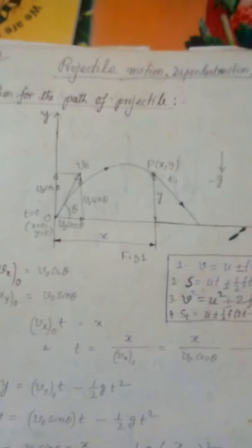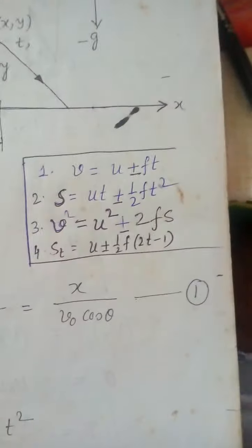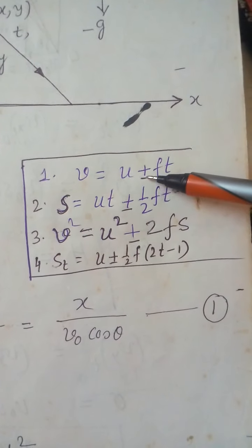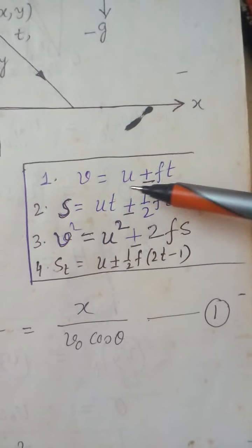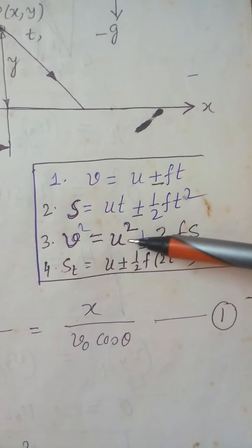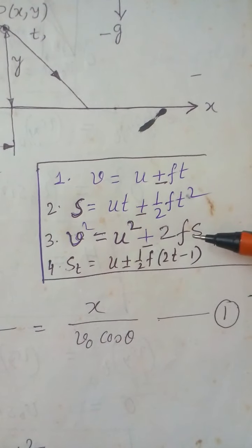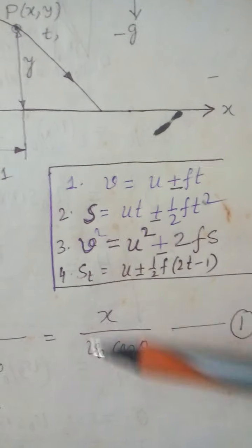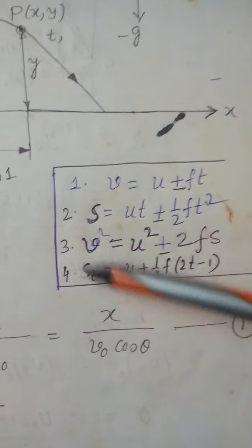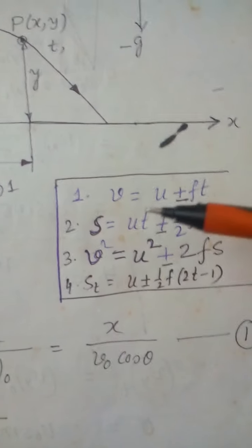We will be using these formulas, which are already known to you: v = u ± ft, where f is the acceleration or deceleration. Also s = ut ± ½ft², and the distance in the t-th second: s_t = u ± ½f(2t − 1). These formulas will be used from time to time.